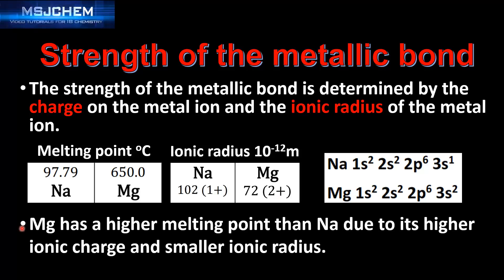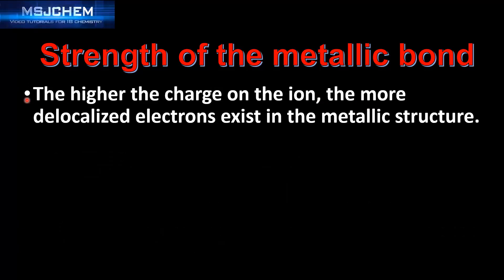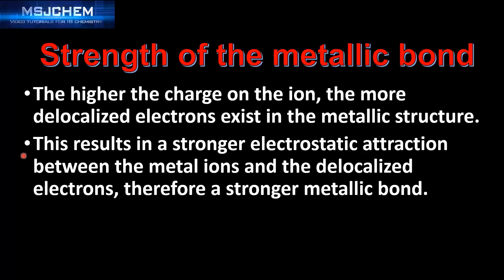So magnesium has a higher melting point than sodium due to its higher ionic charge and smaller ionic radius. The higher the charge on the ion, the more delocalized electrons exist in the metallic structure. This results in a stronger electrostatic attraction between the metal ions and the delocalized electrons, therefore a stronger metallic bond.